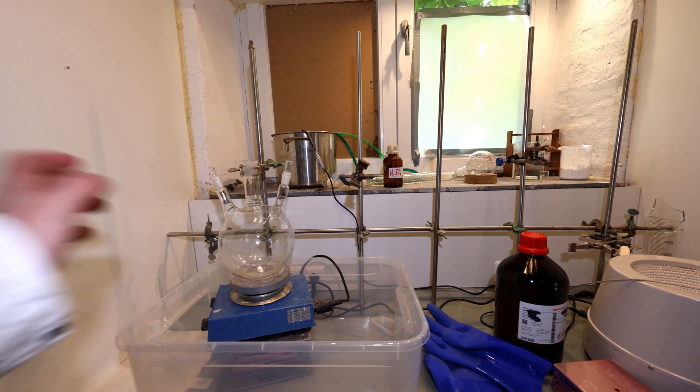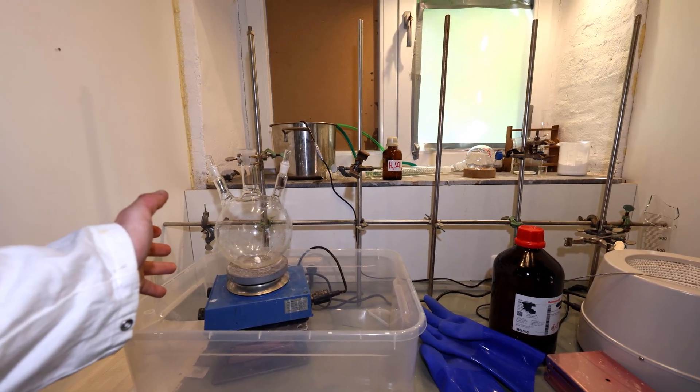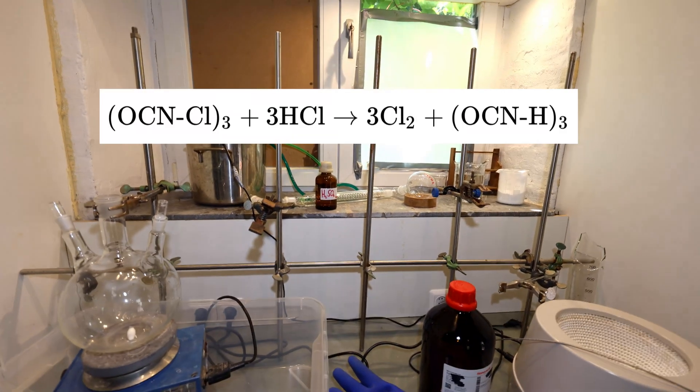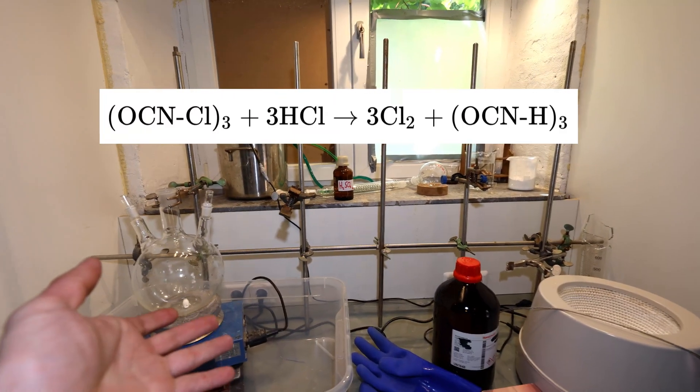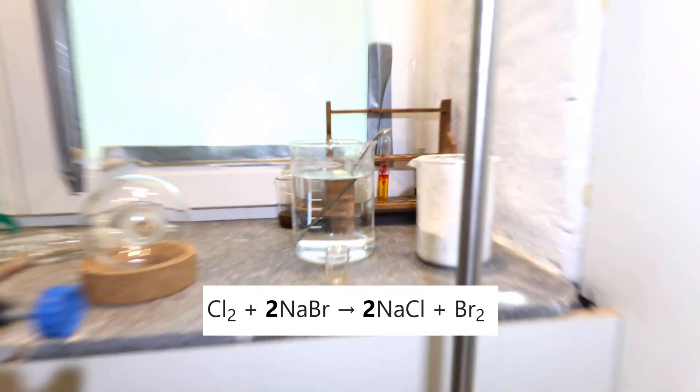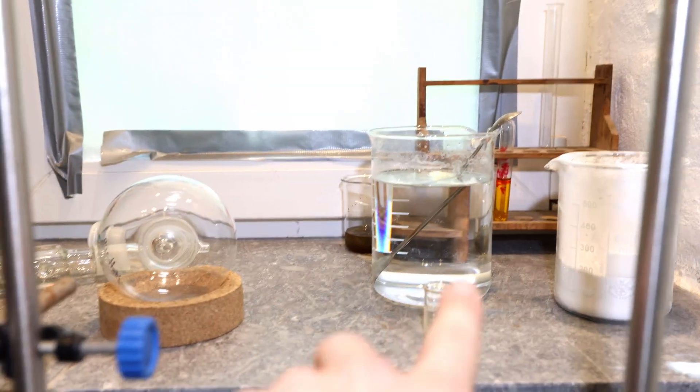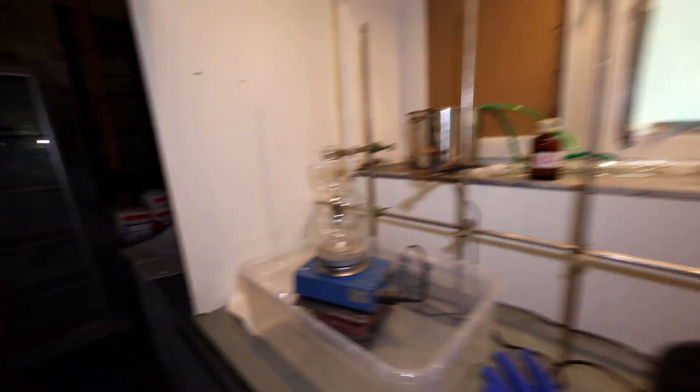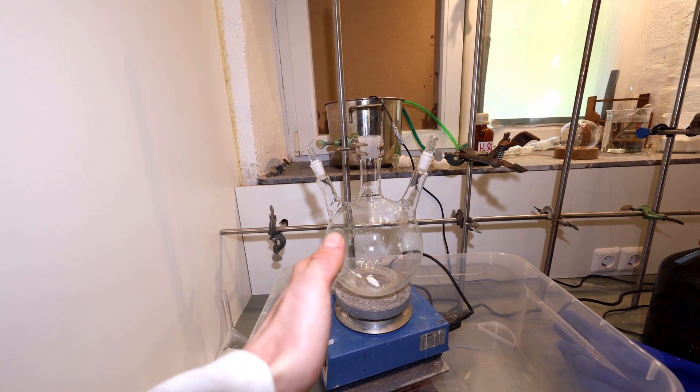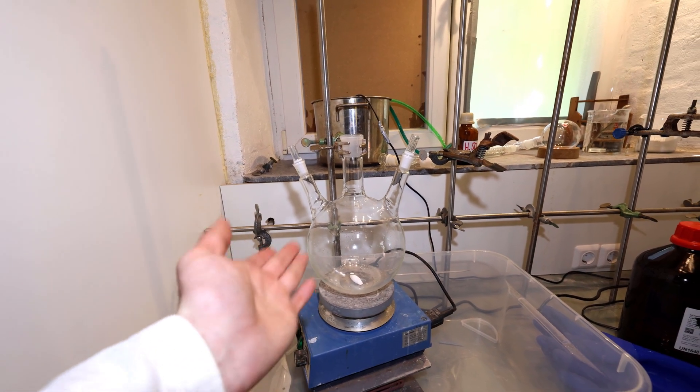What we're going to do is set up a distillation and we're going to react TCCA, so pool chlorine like this stuff right here, with hydrochloric acid. This will free up some chlorine and this will react with sodium bromide. We have the sodium bromide solution already in solution and we're going to put all of this inside here and heat this up and this will make a lot of bromine.